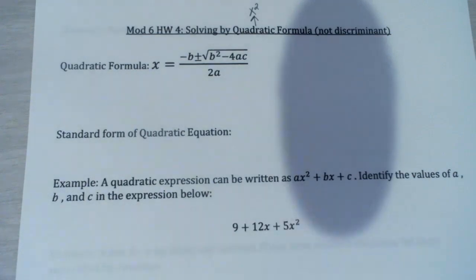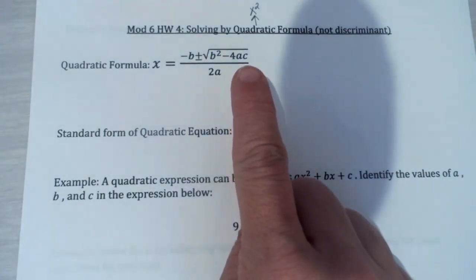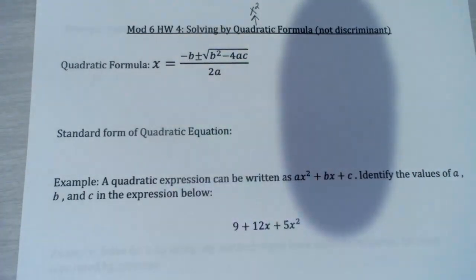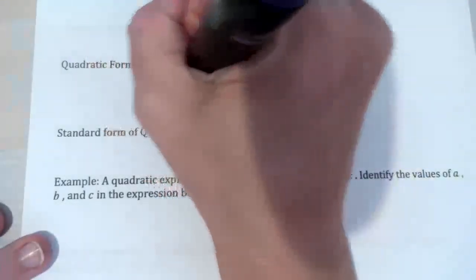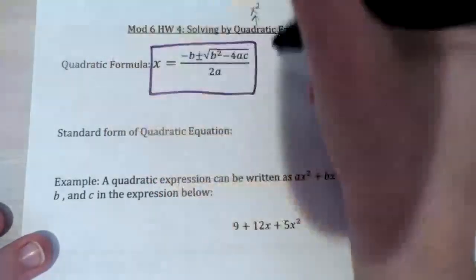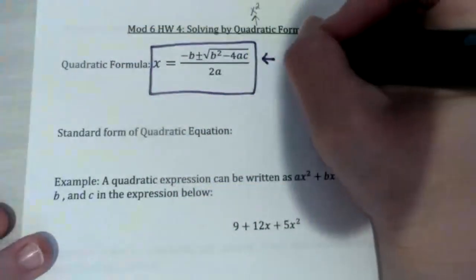Our quadratic formula is x equals negative b plus or minus the square root of b squared minus 4ac, all over 2a. Hopefully a lot of you already know this, but if you don't, make sure you do — you need to know this for the test. This will not be provided for you.